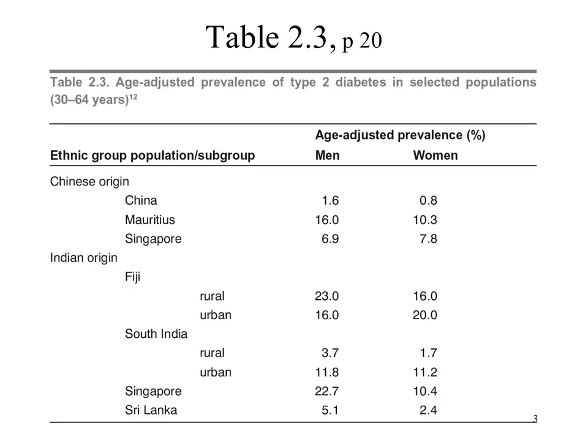This is one example of a table. We're looking at the age-adjusted prevalence of type 2 diabetes in different populations in people aged 30 to 64 years — people from Chinese origin and people from Indian origin. Looking at the age-adjusted prevalence for men and women, you can see how it differs between countries. In Chinese origin people living in China, the rate of diabetes in men is 1.6% and in women is 0.8%. Compare that to people from Indian origin in Singapore: 22.7% of men and 10.4% of women.